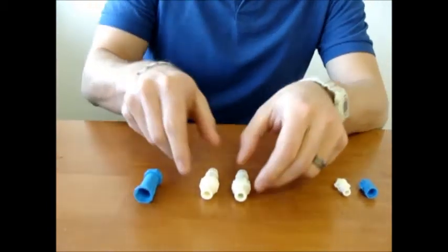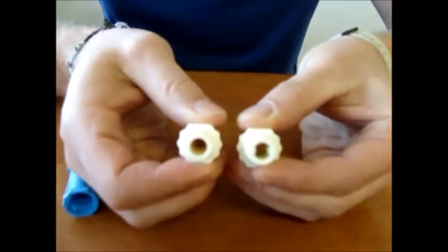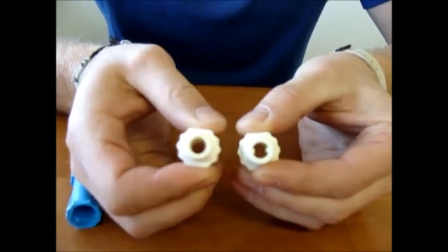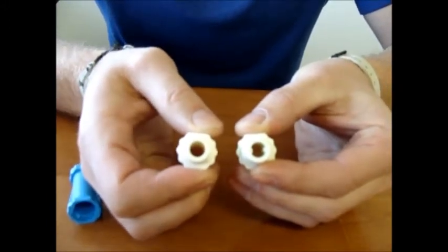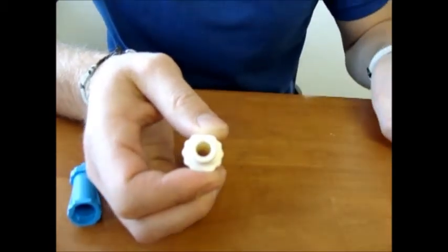What you also need is a W class part. Now you can see with this one on your right that it's got two little teeth in it. This one on your left does not. You have to have a W class, which is this one on your left, in order for this to be possible.